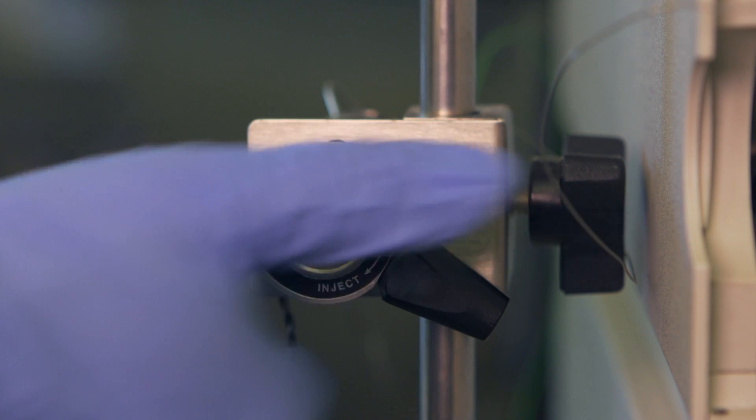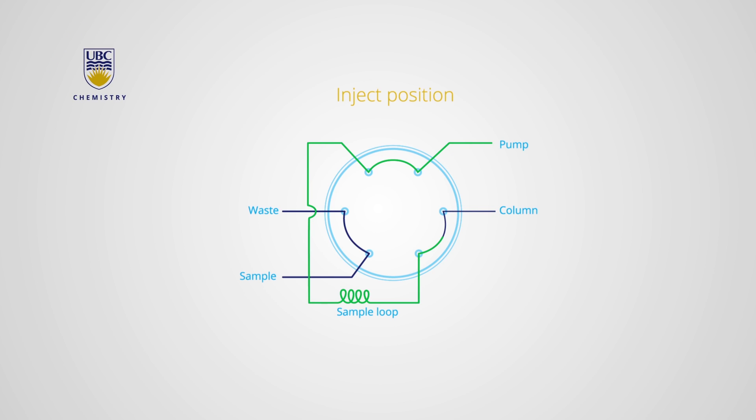When the injector position is switched from load to inject, the sample loop becomes part of the overall mobile phase flow path, and the sample passes through a capillary to get to the column.